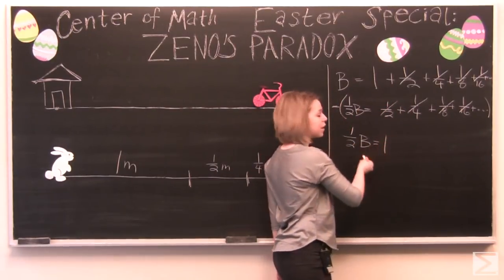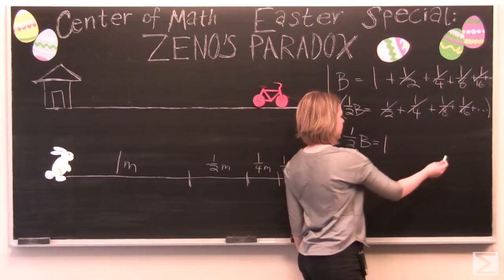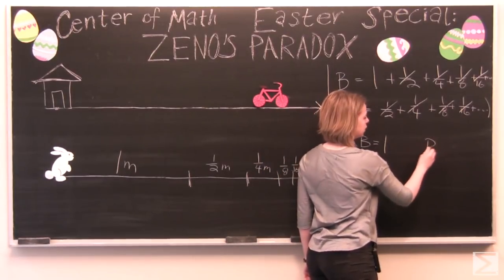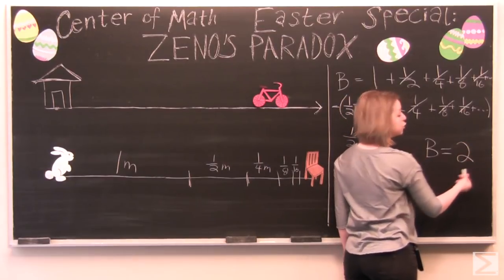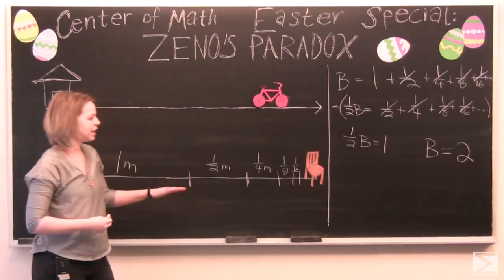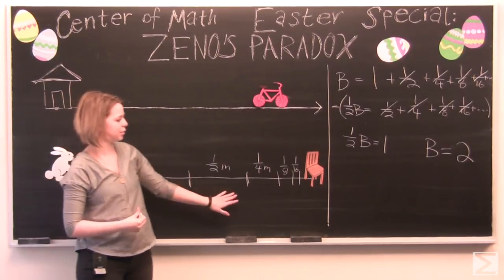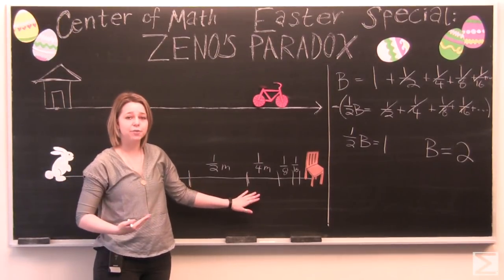So we see that one half b is equal to one. And if we multiply this by two, the distance that the Easter Bunny travels is two meters. And so we see that the Easter Bunny, even though Zeno's paradox seems a little bit weird, the Easter Bunny will travel those two meters.